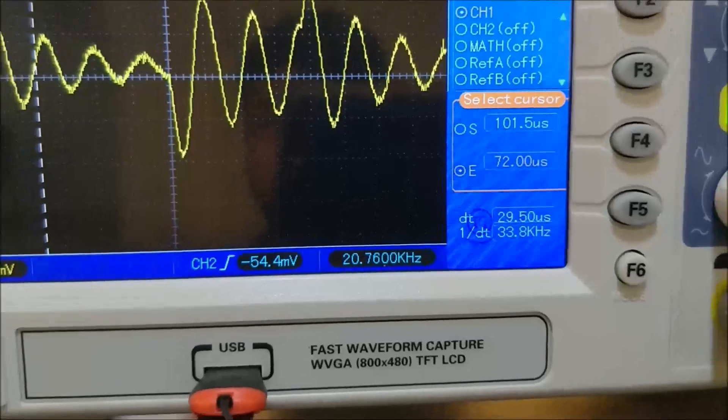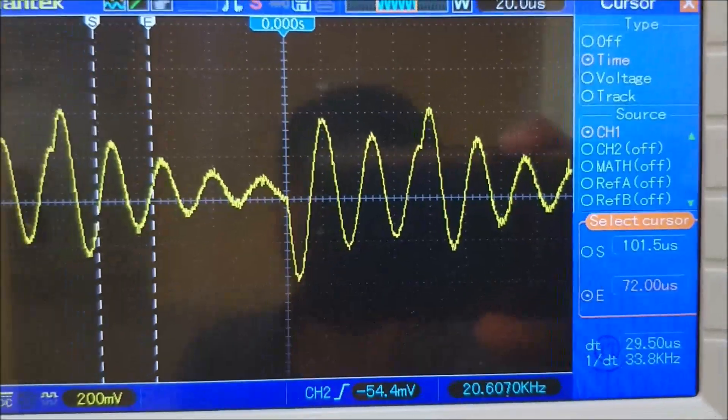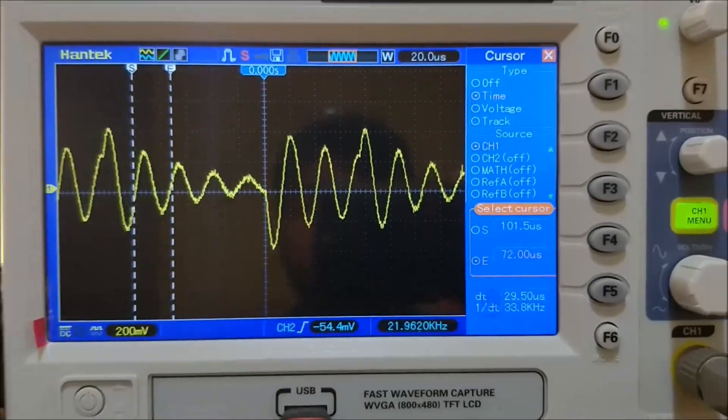So all we have to do is use the value of this capacitor and this resonance frequency in the formula: F is equal to 1 by 2 pi root of LC. So we have to calculate the value of L. We already know the value of this resonance frequency and the capacitor, and thus you can find the value of the inductor.